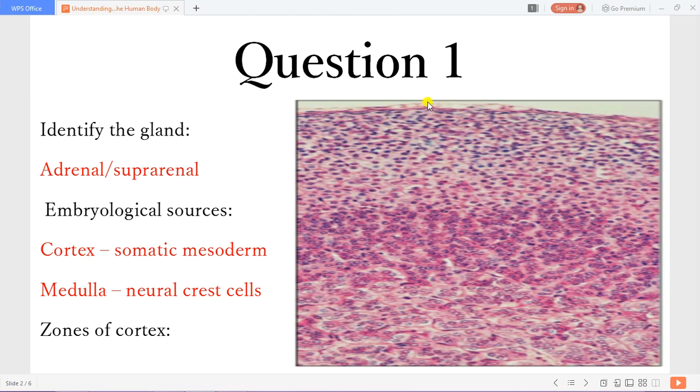You can appreciate the capsule of the adrenal gland. This is the zona glomerulosa. Then you have the zona fasciculata and the zona reticularis. Then this is the adrenal medulla.